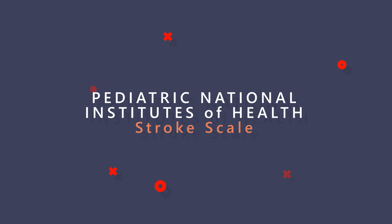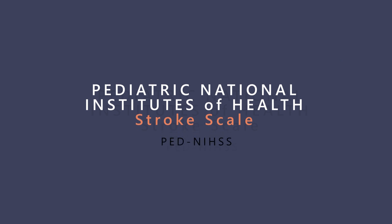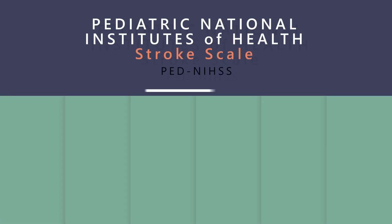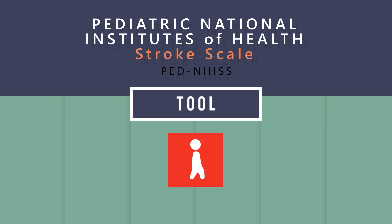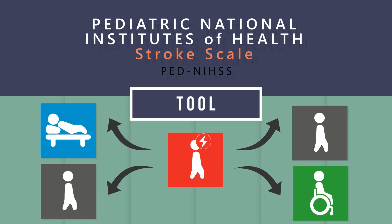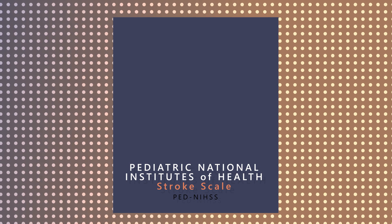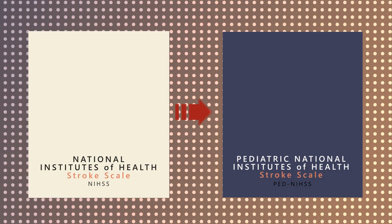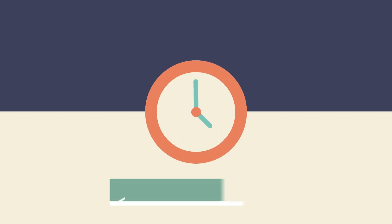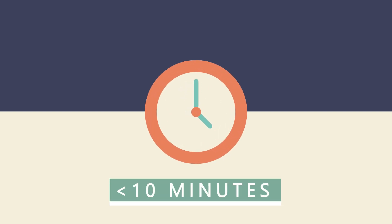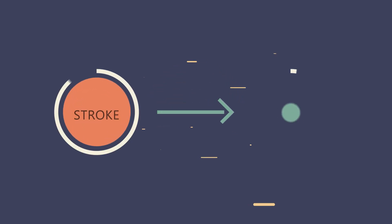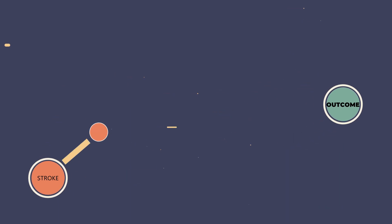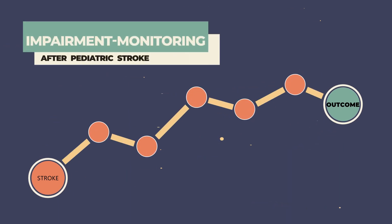The Pediatric National Institutes of Health Stroke Scale, or PEDNIHSS for short, is a tool to quantify the initial severity of a stroke in childhood. The PEDNIHSS, a modification of the NIHSS for adults, can be done in less than 10 minutes. It can be summed up in one number, correlates with the long-term outcome, and allows a common language between all the caregivers to monitor the pediatric stroke patient.